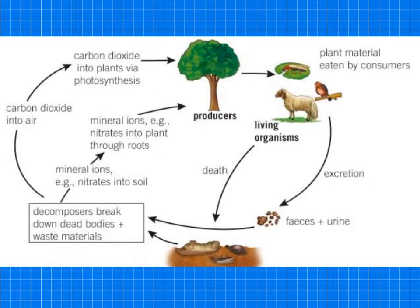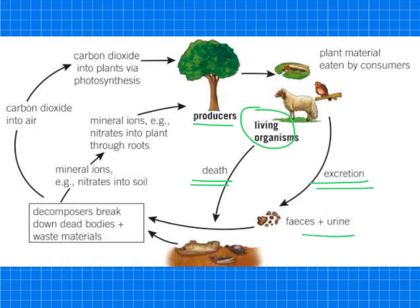To summarise the decay cycle, we need to look at the whole picture. First of all, we've got producers, which are plants and also living organisms — these are the things that feed off plants and feed off each other. And there are two things that are eventually going to happen: they're going to die, and also there's going to be excretion of faeces and urine. Those will start to be broken down by decomposers.